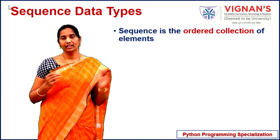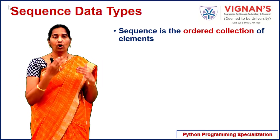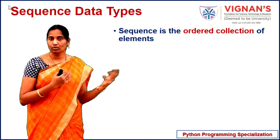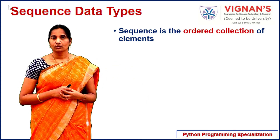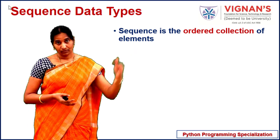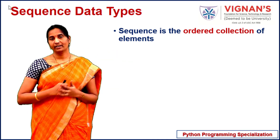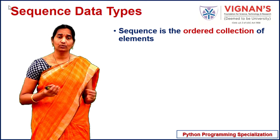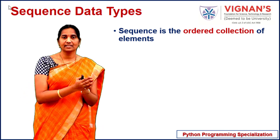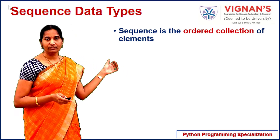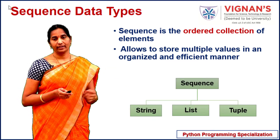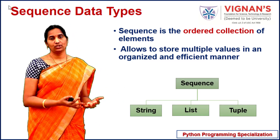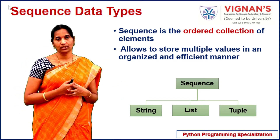Sequence data is an ordered collection of elements. With scalar types like integer, float, or complex, we can store only a single value. But if we want to store a collection of elements — say, marks of a thousand students — using only scalar types would require declaring a thousand different variables, which is very difficult to track. Instead, we can use collection data types to store multiple elements as a single variable. Python supports this with sequence data types like list, tuple, and string, allowing us to store, retrieve, and perform operations on multiple values efficiently.